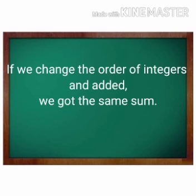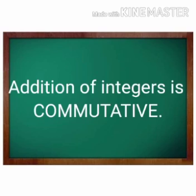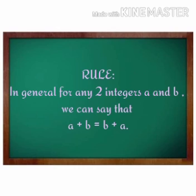So you see, even if we change the order of integers and add them, we get the same sum. So we can say addition of integers is commutative. In general, for any two integers A and B, we can say A plus B is equal to B plus A.